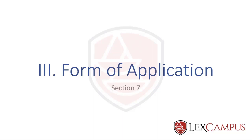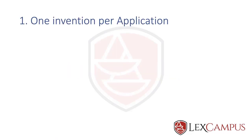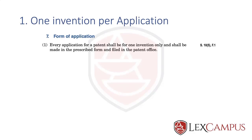Form of application is mentioned in section 7, which we will be looking at in detail today. The first principle you need to remember with regard to section 7 is there can only be one invention per application. This we get from section 7.1: every application for a patent shall be for one invention only and shall be made in the prescribed form, which is Form 1, and filed in the patent office.